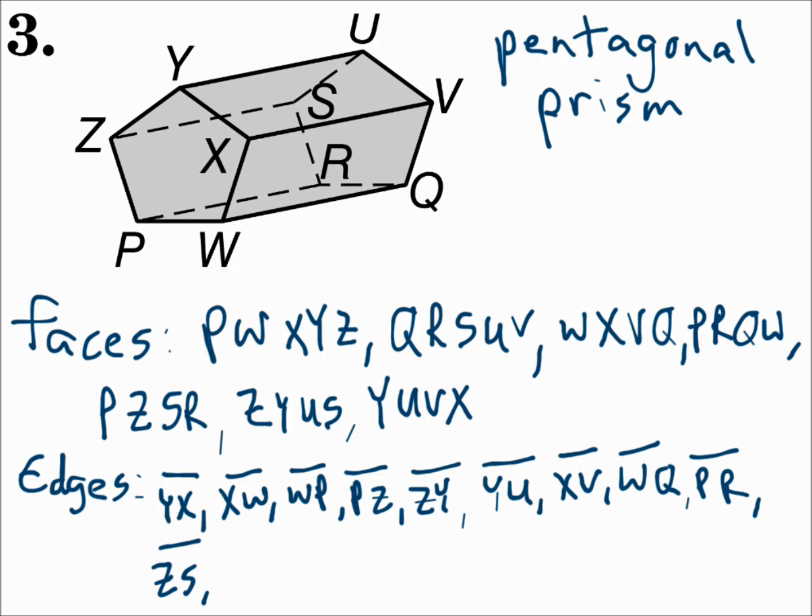And on the right-hand pentagon, you have segment UV, segment VQ, segment QR, segment RS, and segment SU.